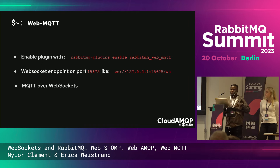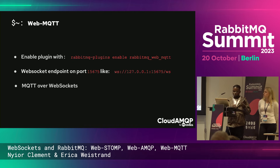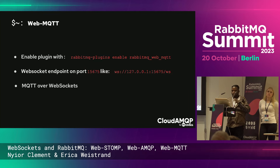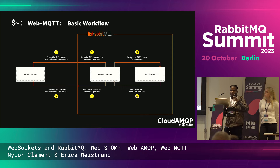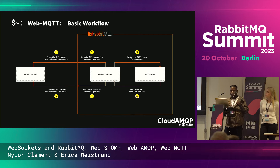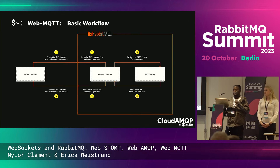WebMQTT is not so different from WebSTOMP, only now it's MQTT-focused. Enabling this plugin exposes a WebSocket endpoint that can accept MQTT frames wrapped in WebSocket packets. A browser-based application sends MQTT frames wrapped in WebSocket packets to your RabbitMQ node; the WebMQTT plugin unpacks the MQTT frames and hands them to the MQTT plugin. Again, if the server needs to send a response back, the reverse happens.